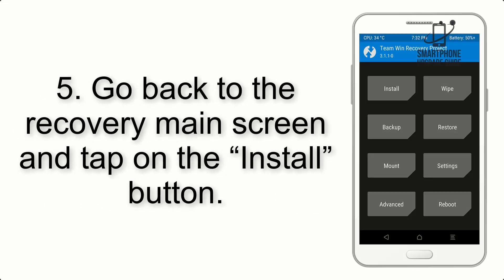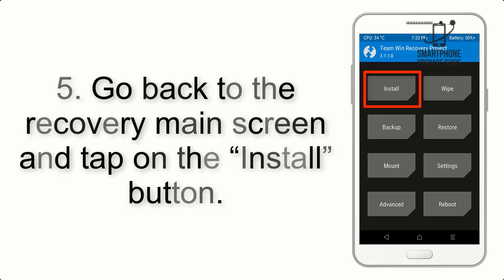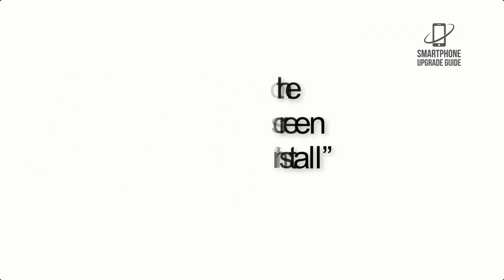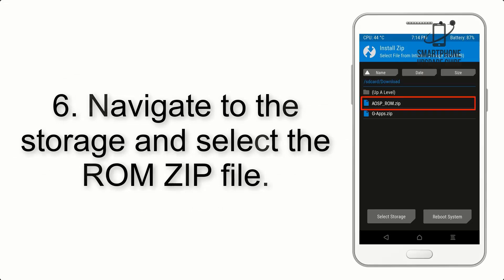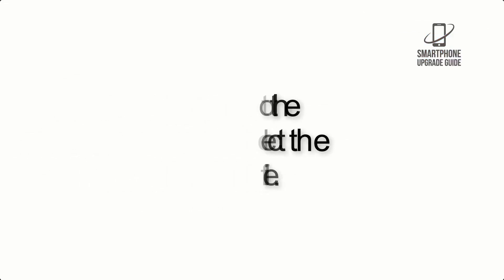Step 5: Go back to the Recovery main screen and tap on the Install button. Step 6: Navigate to the Storage and select the ROM ZIP file.